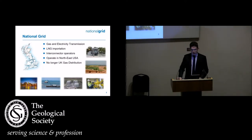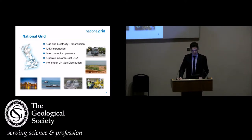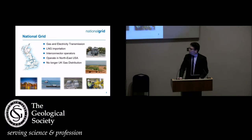Most of you probably know National Grid as a gas and electricity transmission business primarily in the UK. We also do LNG importation at the Isle of Grain and have various interconnectors with Ireland and the continent. Half our business is over in the US — in the northeast USA we have a big utility business. Until recently we had four of the UK gas distribution regions, but we sold them last year.